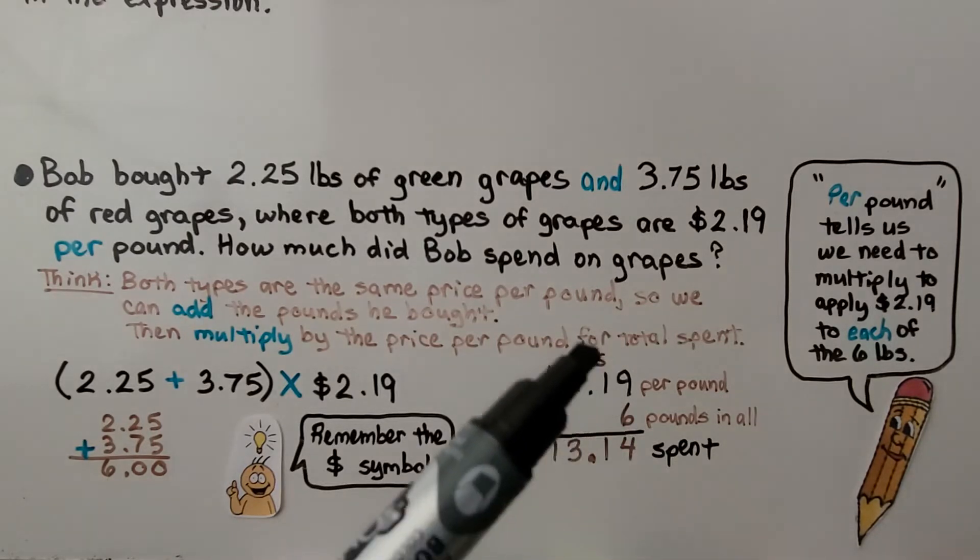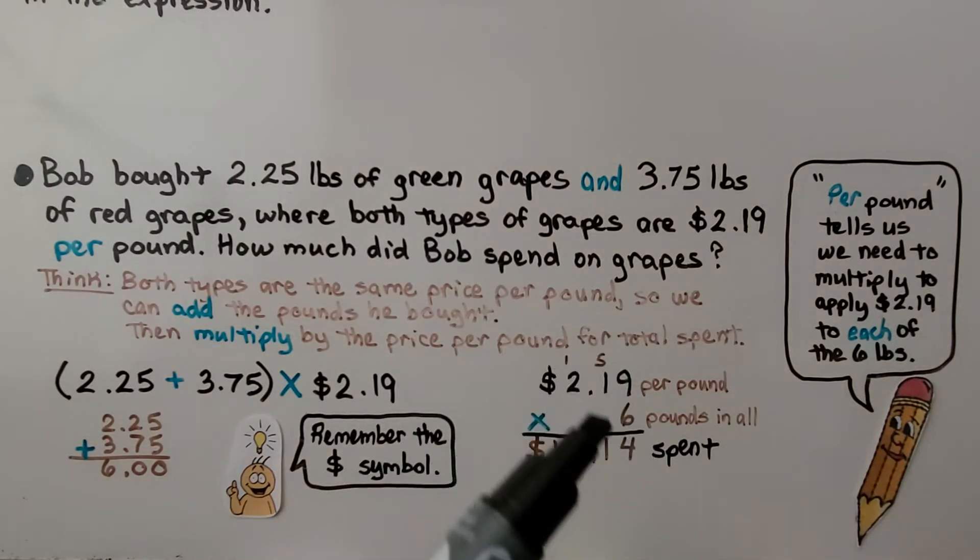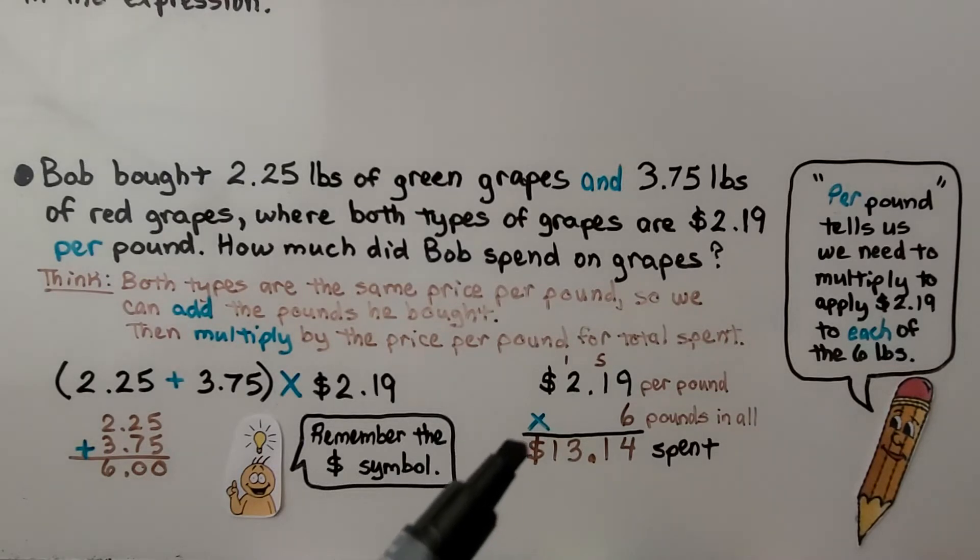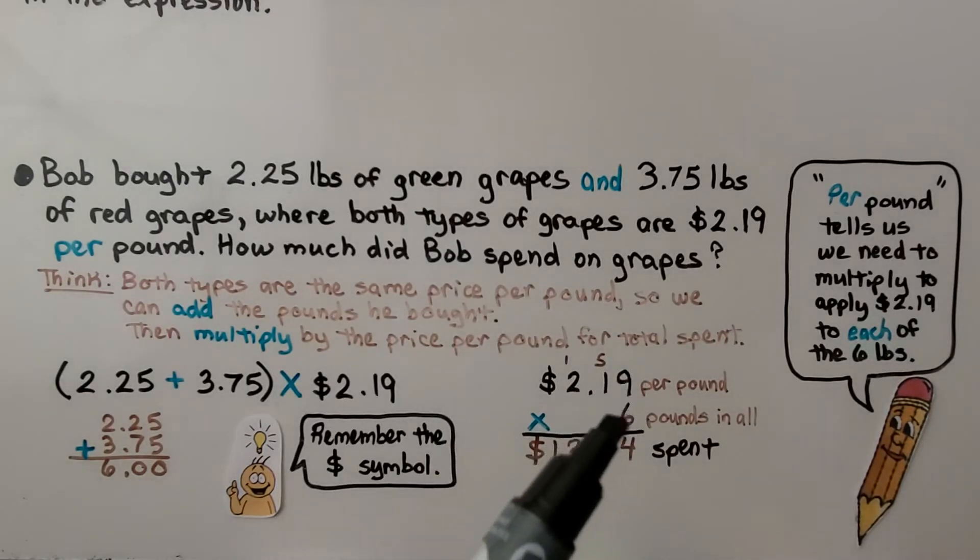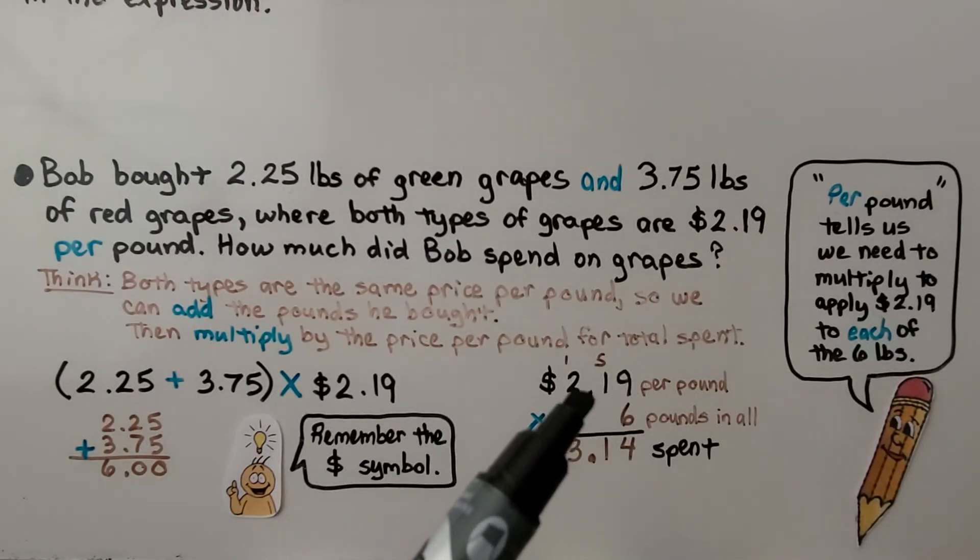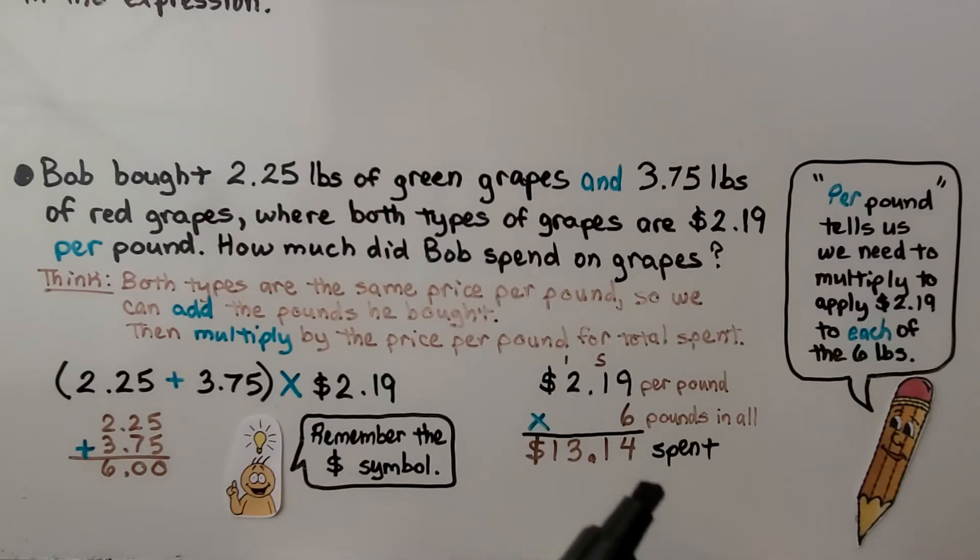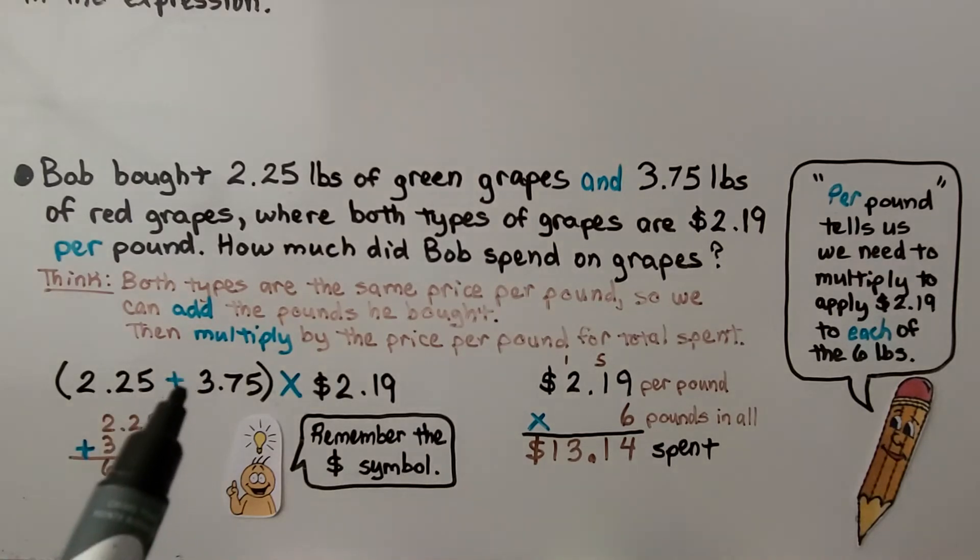We do our regular algorithm. That means the regular way to multiply. We remember the dollar sign and we have 1, 2 jumps in the equation for the decimal point. So there's going to be 1, 2 jumps in the product. We have $13.14 that he spent. We wrote it to do addition within the parentheses first. Then, when we had that total, we multiplied it by the price per pound.